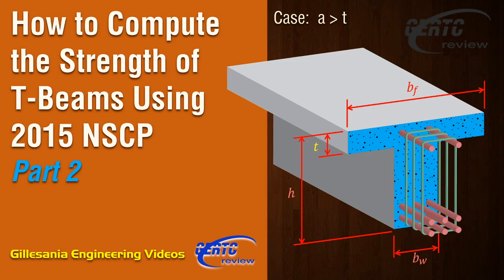All right, so in this video we'll have Part 2 of this series. In Part 1, we had the case wherein the depth of the compression block is less than the thickness of the slab, so a less than t. In this part, we will discuss the case wherein the depth of the compression concrete or the compression block is more than the thickness of the slab.